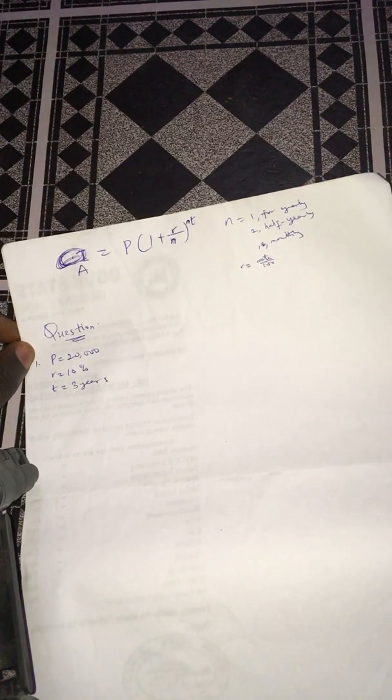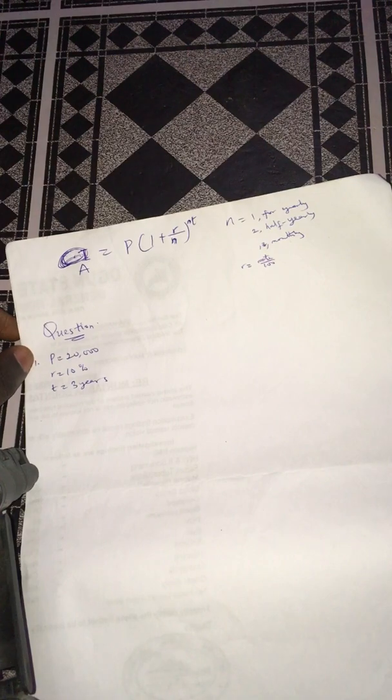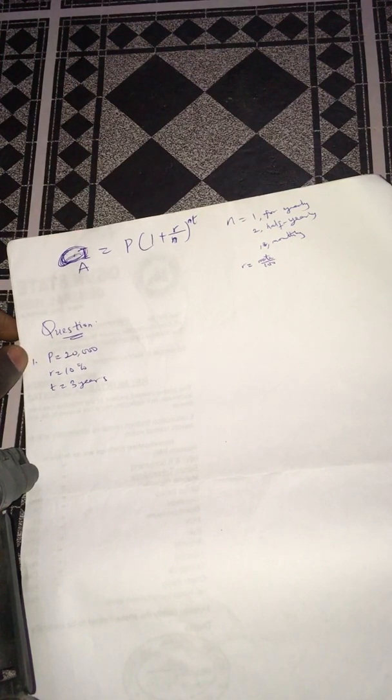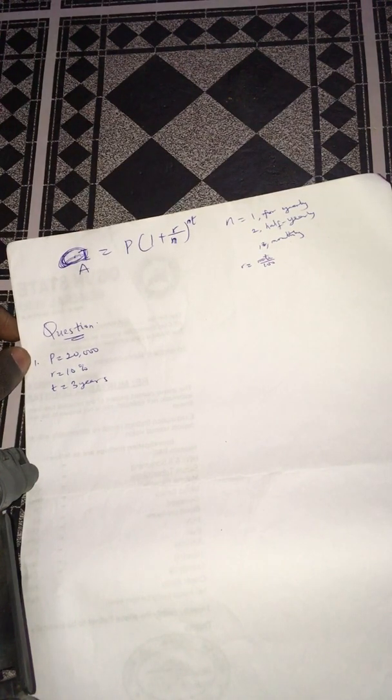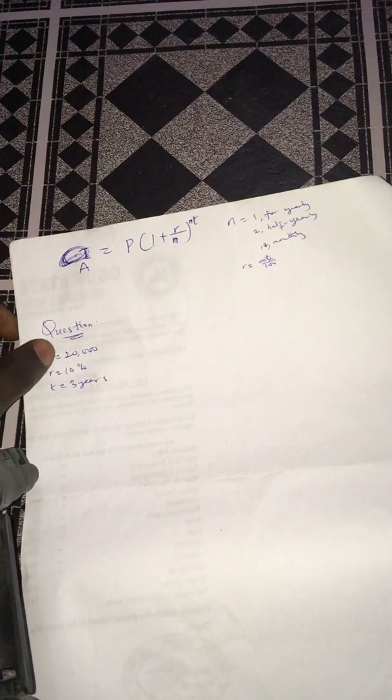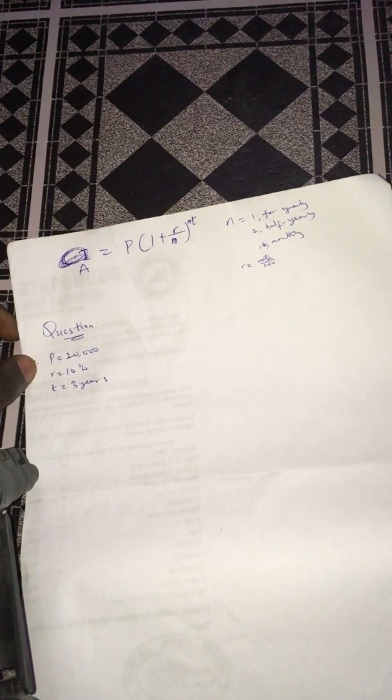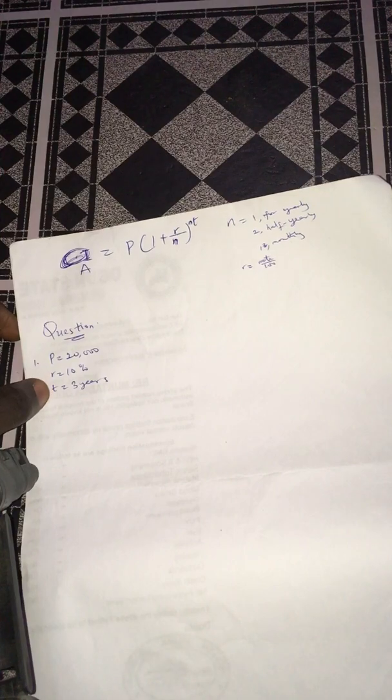We got a question from itbullseye.com - I'll be sharing the link in the description. The question was to calculate the amount if we have a principal of 20,000 rupees at the rate of 10% for 3 years.